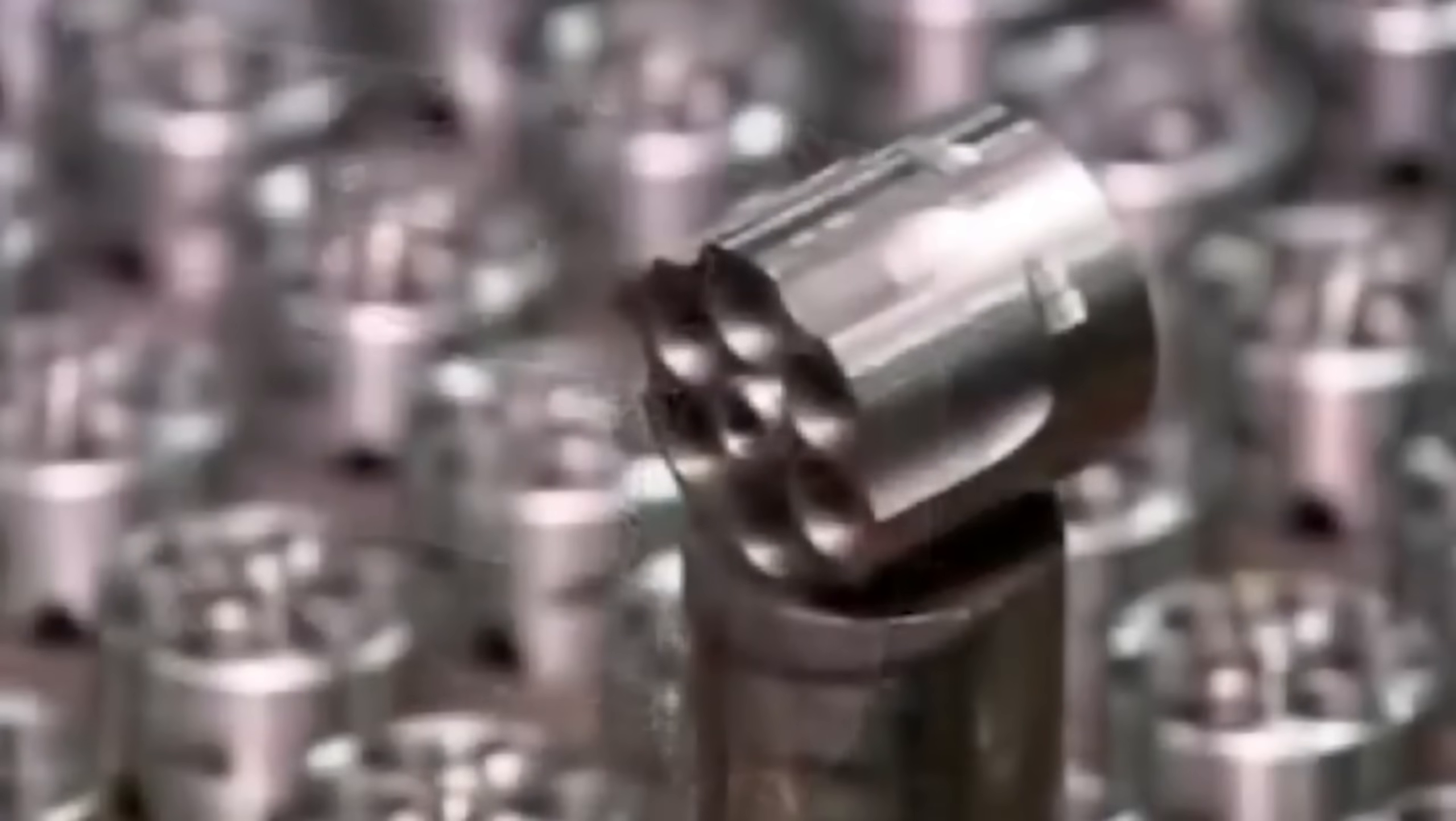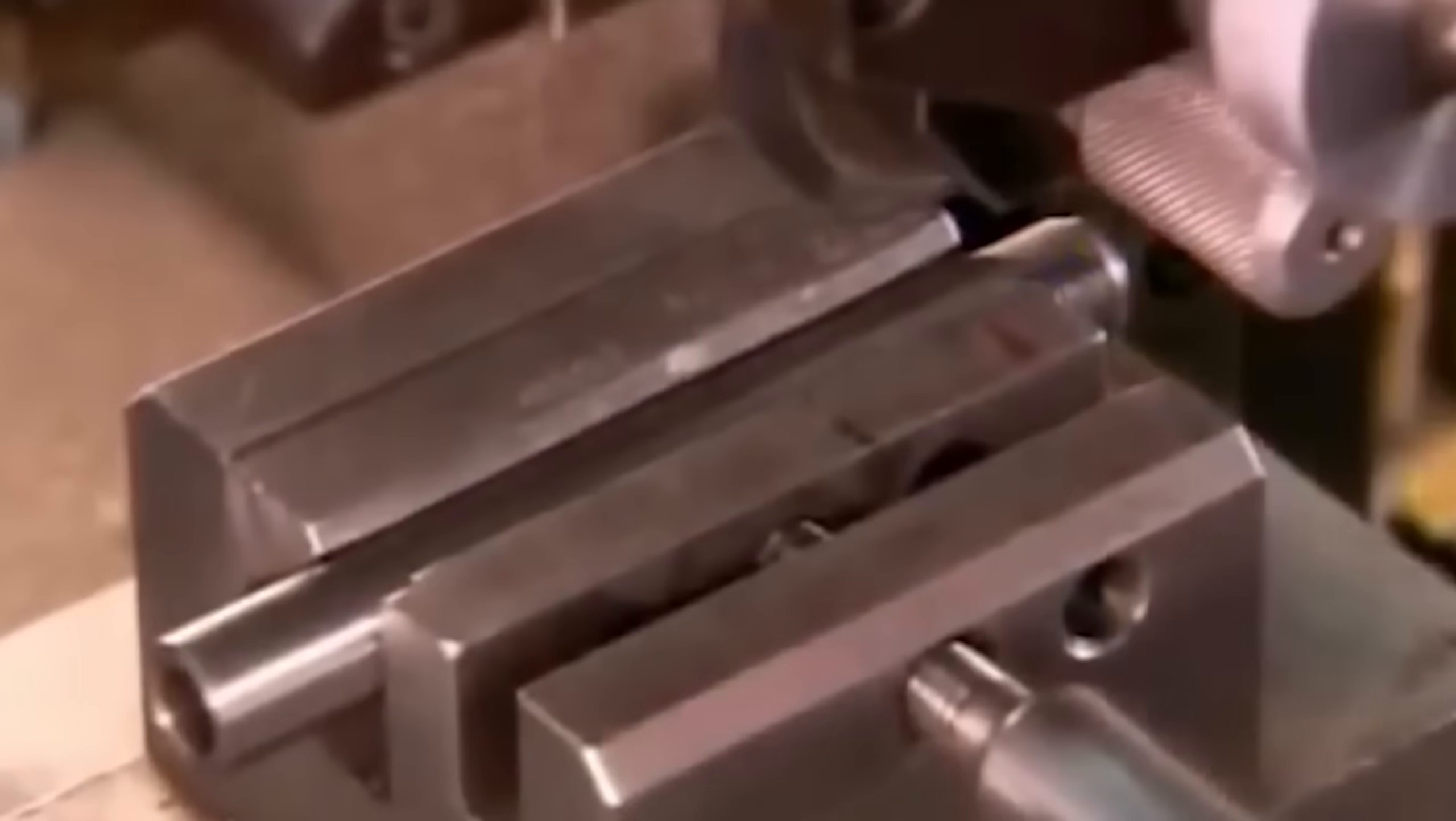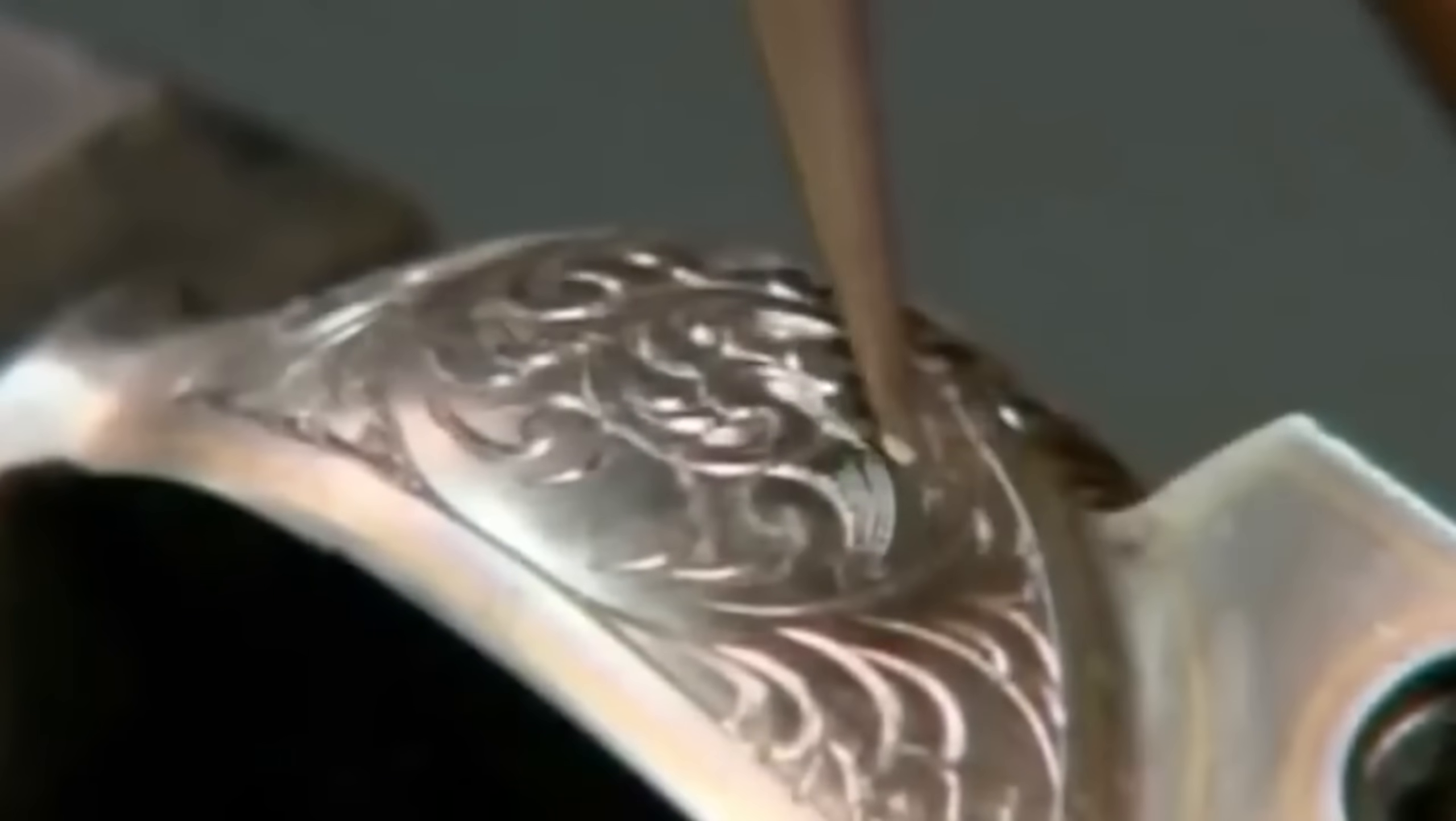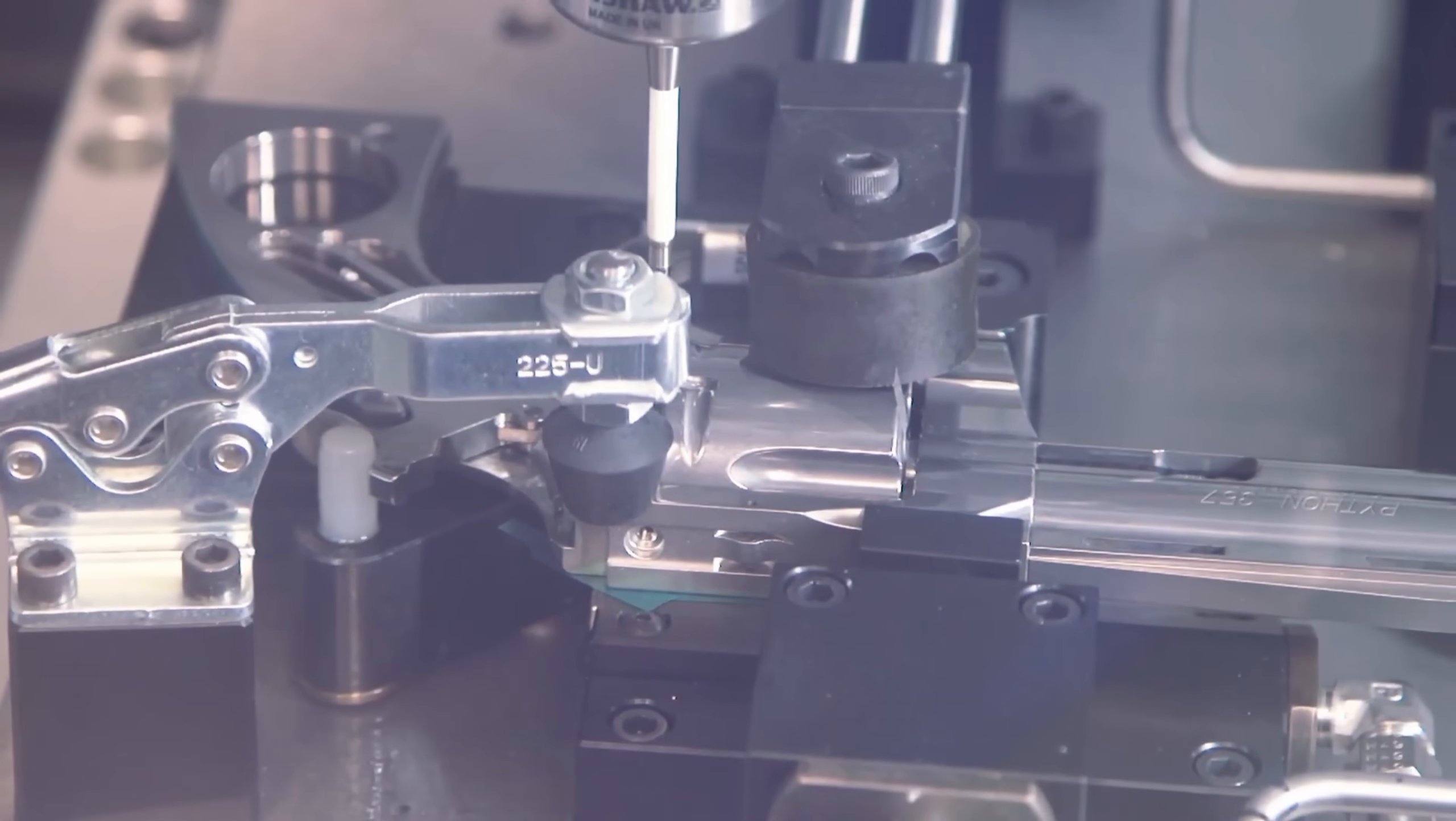After the first round of milling, the frame still looks pretty rough. Operators secure it in the machine for a second set of passes, where the CNC tools refine the shape and add more detailed features. This includes the slots for the trigger mechanism, the mounting points for the barrel, and the housing for the cylinder. The machines work in multiple axes, letting them carve complex curves and tight corners that define the revolver's profile. At this stage, the frame starts to take on its familiar look, but it still needs more work to reach its final form.